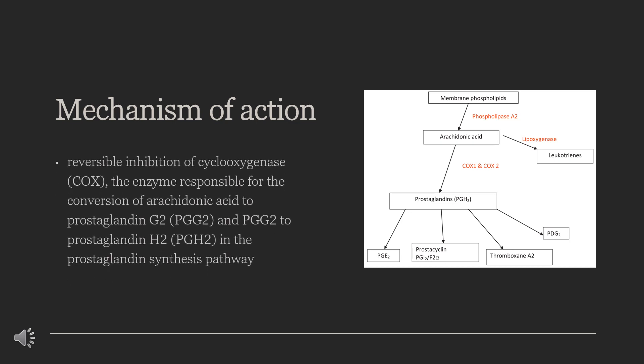Similar to other NSAIDs, the anti-inflammatory effect of Flurbiprofen occurs via reversible inhibition of cyclooxygenase (COX), the enzyme responsible for the conversion of arachidonic acid to prostaglandin G2 (PGG2), and PGG2 to prostaglandin H2 (PGH2), in the prostaglandin synthesis pathway. This effectively decreases the concentration of prostaglandins involved in inflammation, pain, swelling, and fever. Flurbiprofen is a non-selective COX inhibitor and inhibits both COX-1 and COX-2. It is also one of the most potent NSAIDs in terms of prostaglandin inhibitory activity.